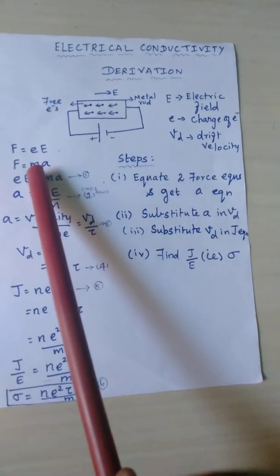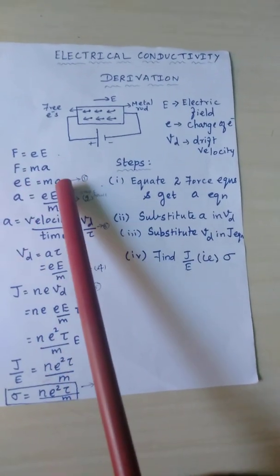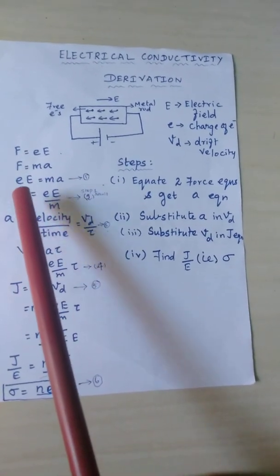We equate these two force expressions: eE = ma, and we get the acceleration a = eE/m.